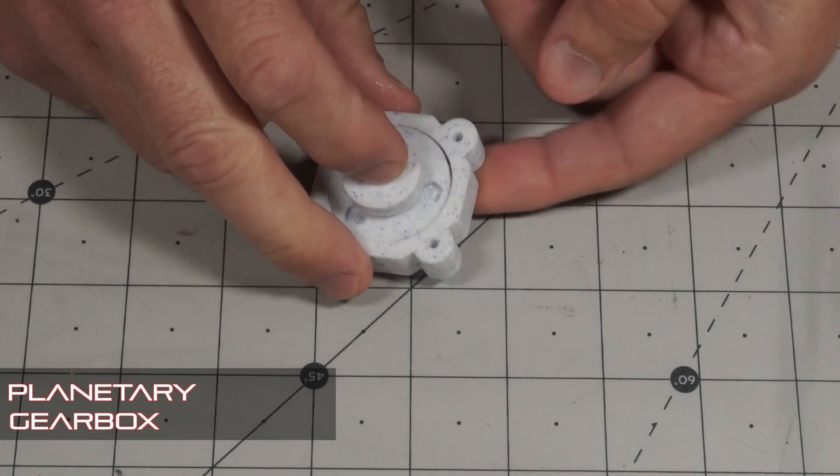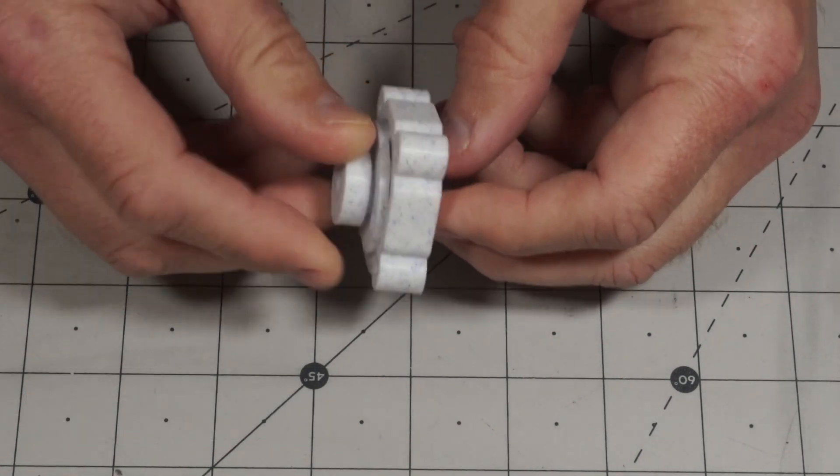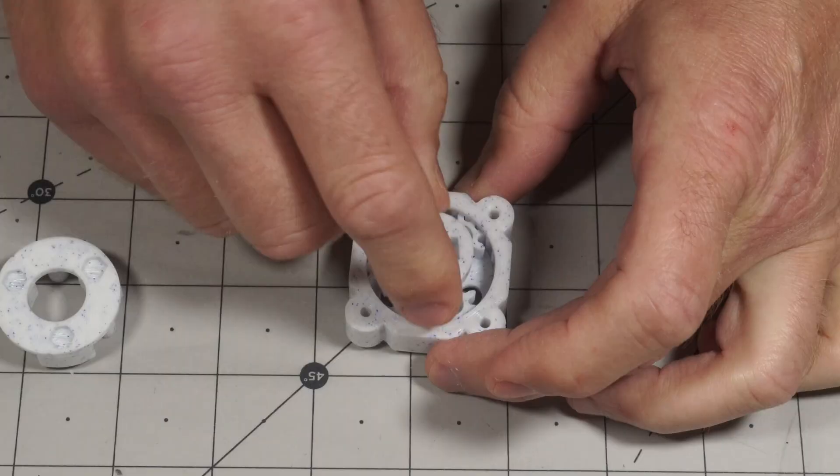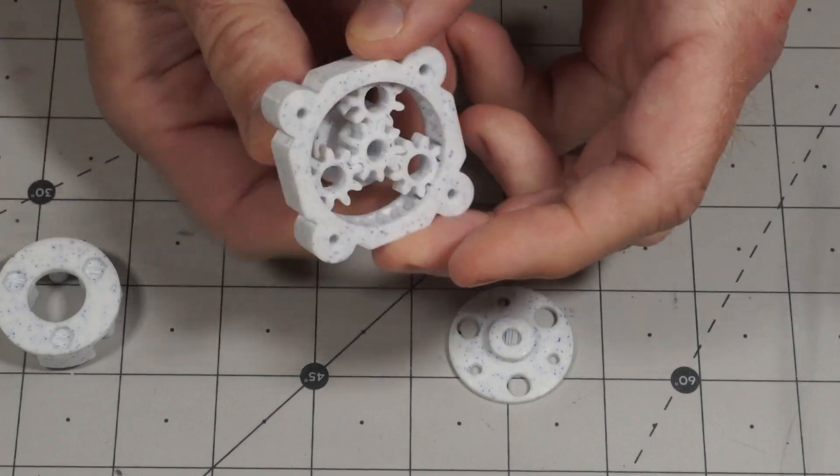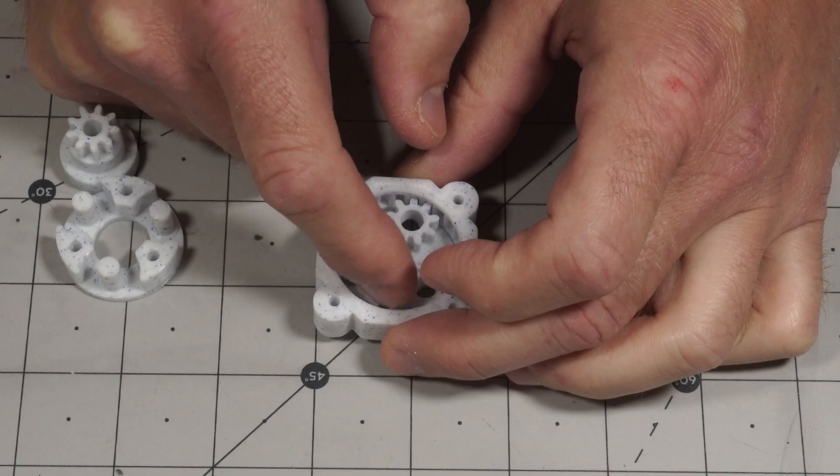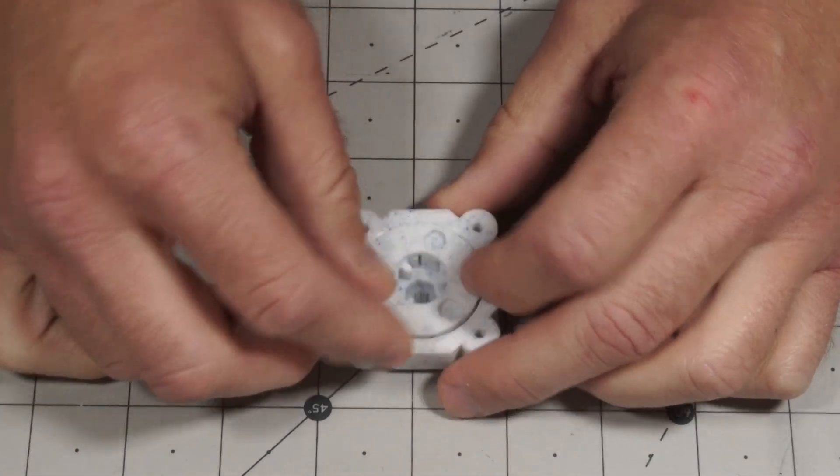Another model that I did was this gearbox, this planetary gearbox. And as you can see here, if I turn it this way, it goes the other way. There we go.